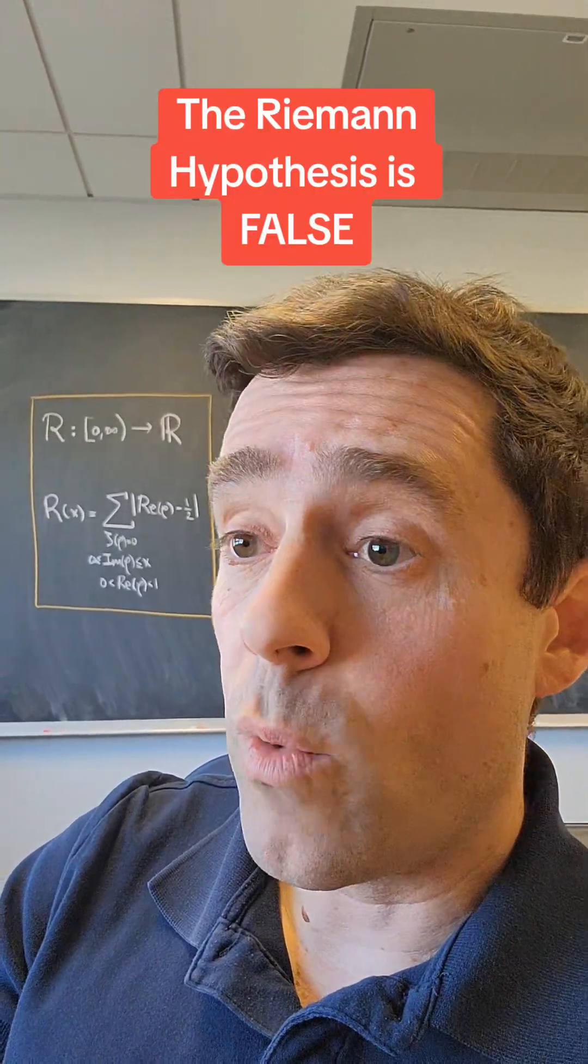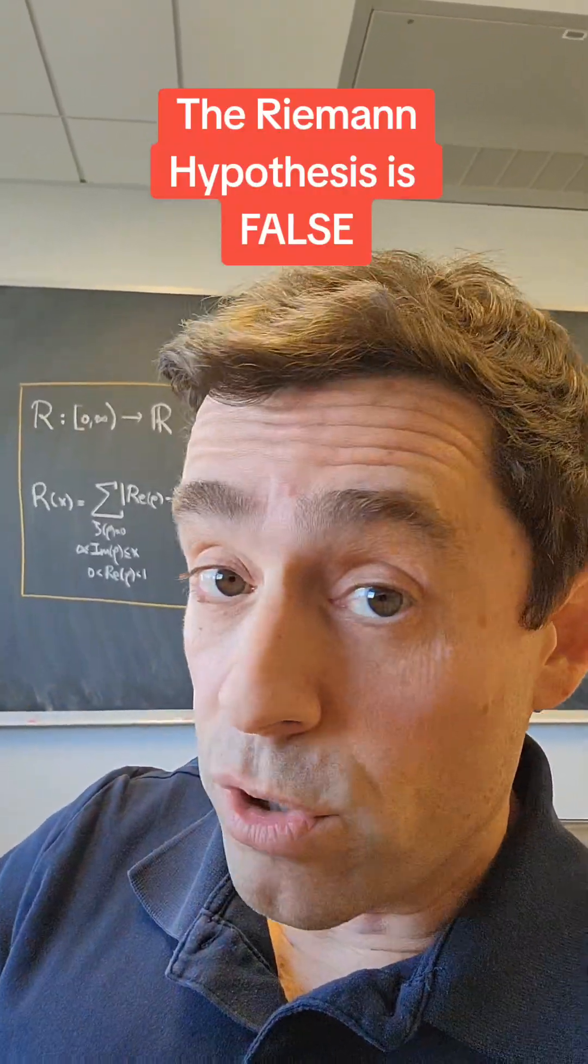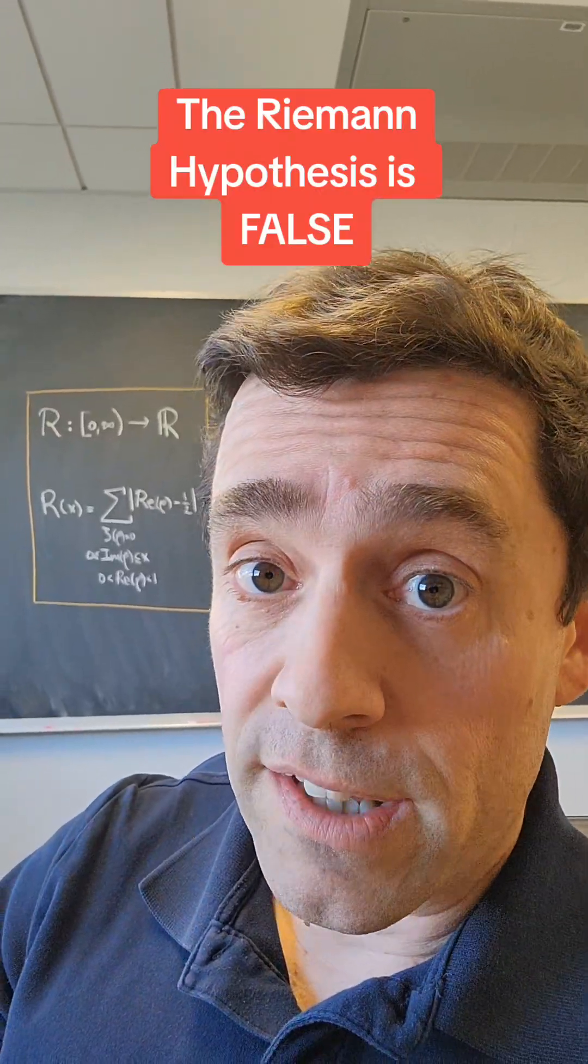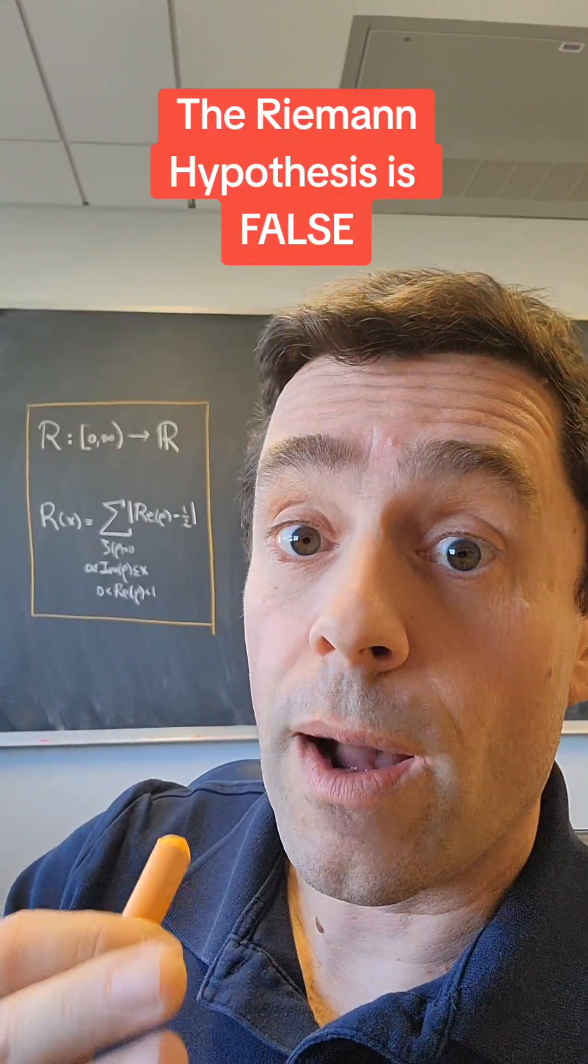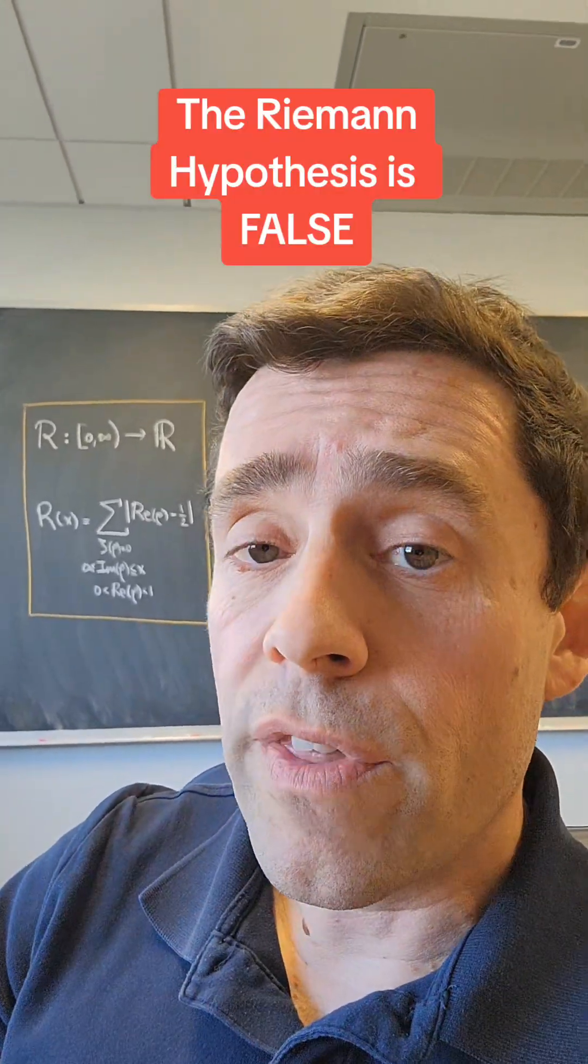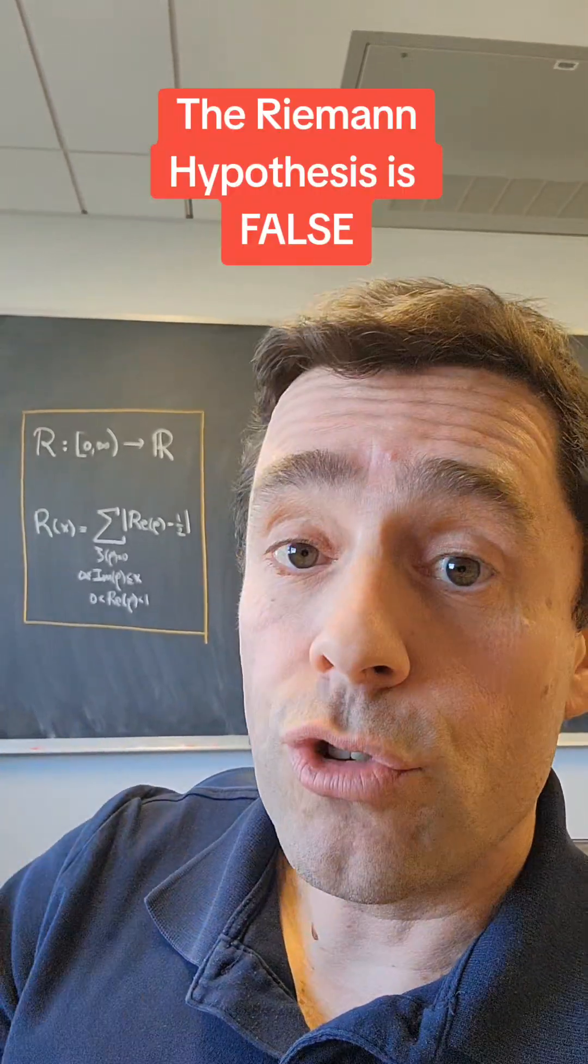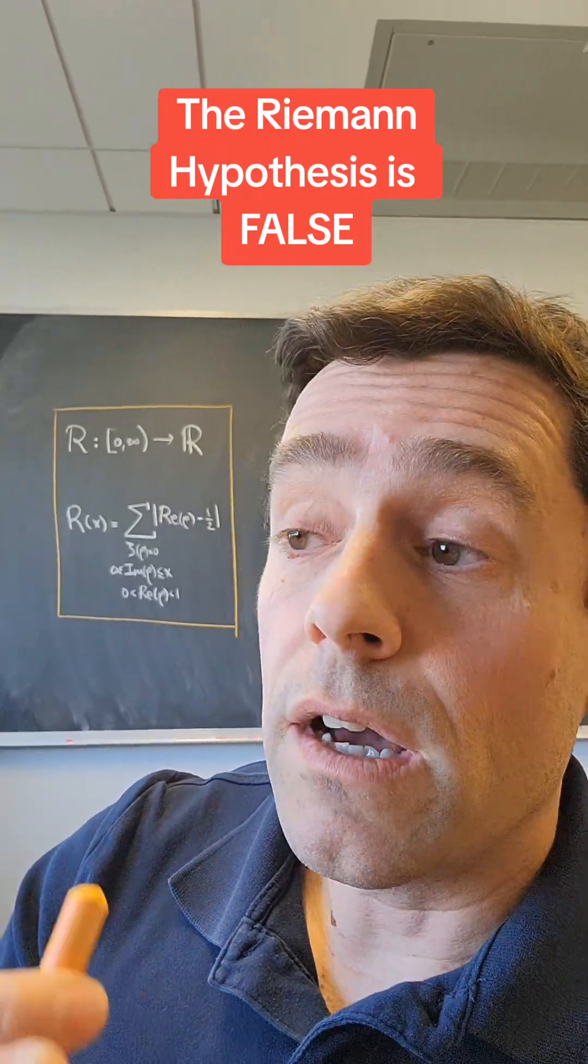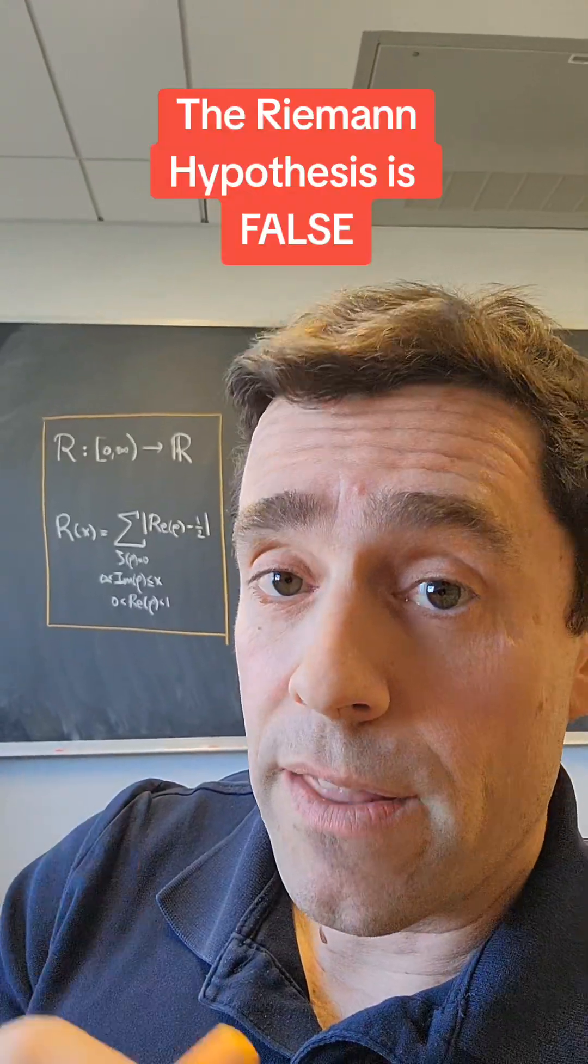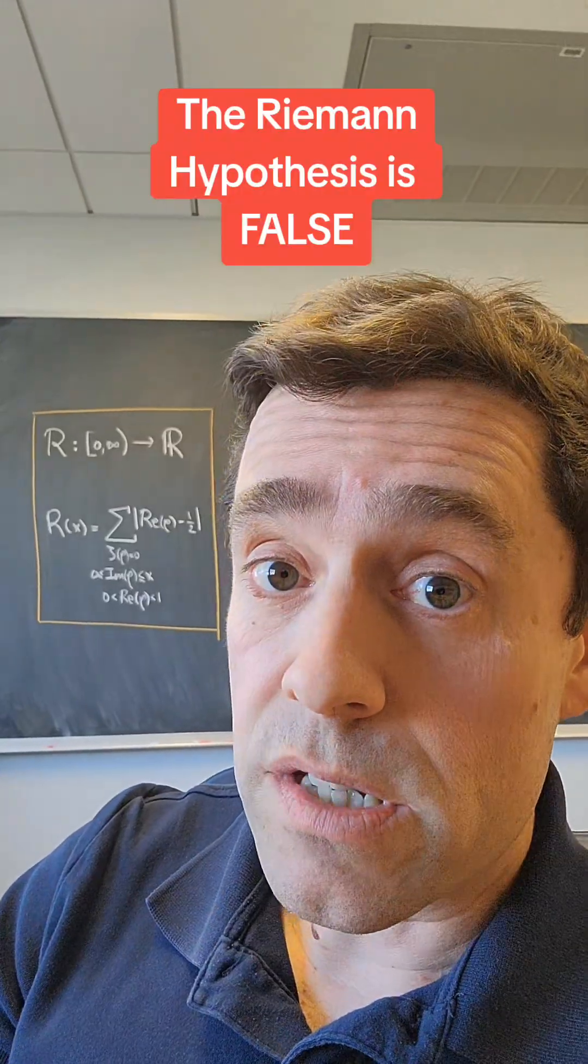As you know, the Riemann Hypothesis is one of the most important open problems in number theory, one of the most important open problems in all of mathematics, so much so that there is a $1 million reward for a proof or disproof of the conjecture. I am going to disprove it, and I'm going to use this video as evidence that I have done so, and I would like to claim that $1 million reward for disproving the Riemann Hypothesis.